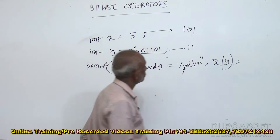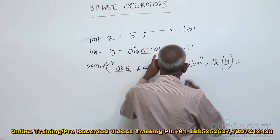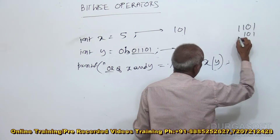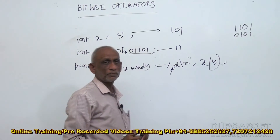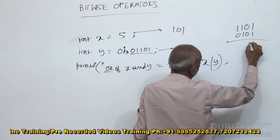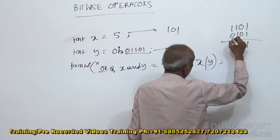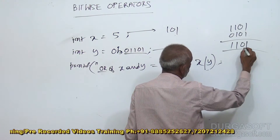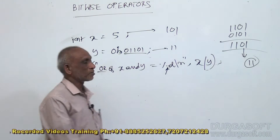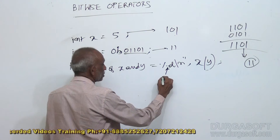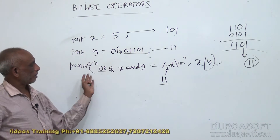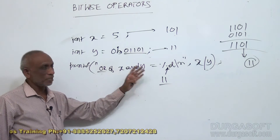For the OR operation: x is 1101 and y is 0101. OR-ing these gives 1011, which equals 11 in decimal. So the output displayed is 11. This is how a bitwise OR operation is performed in C.